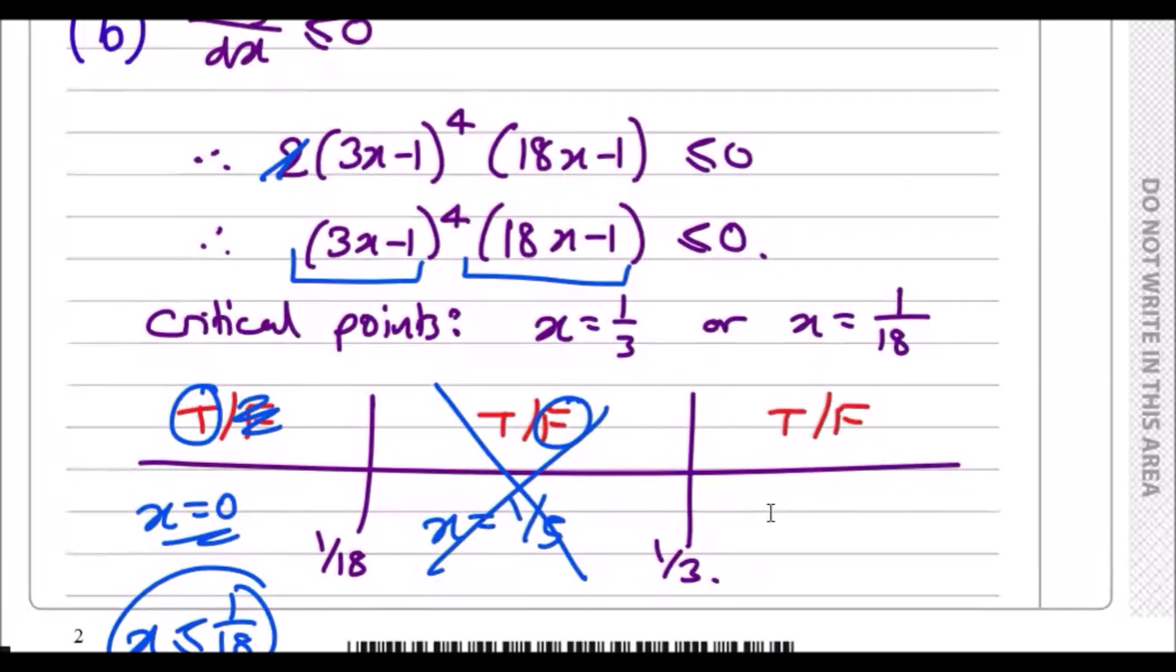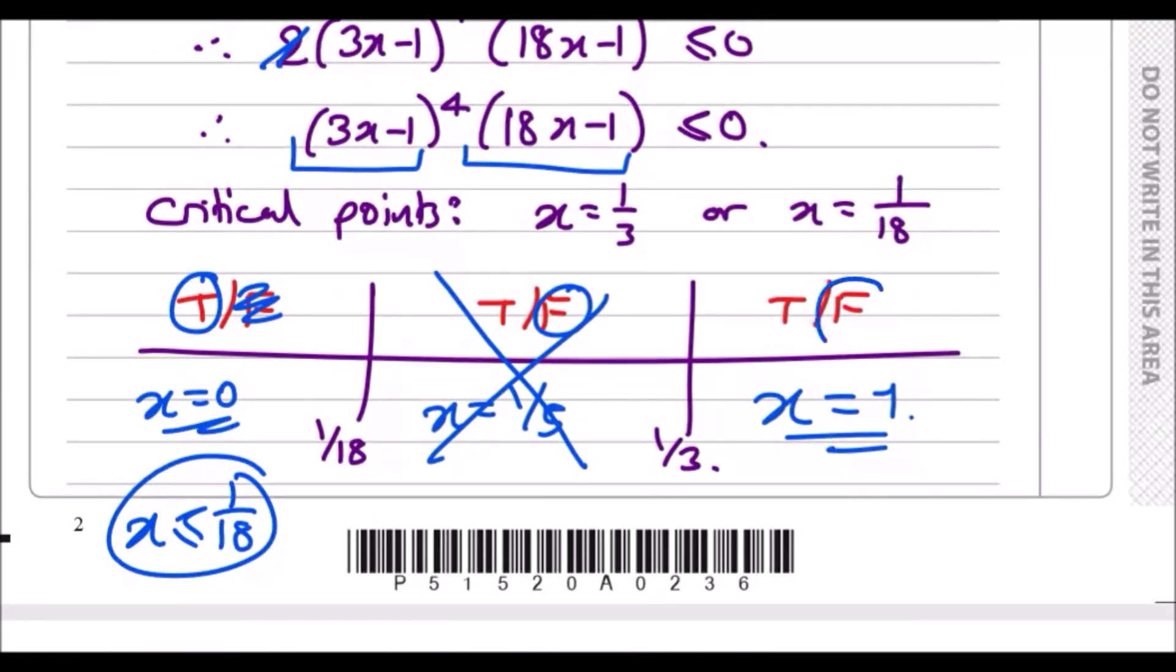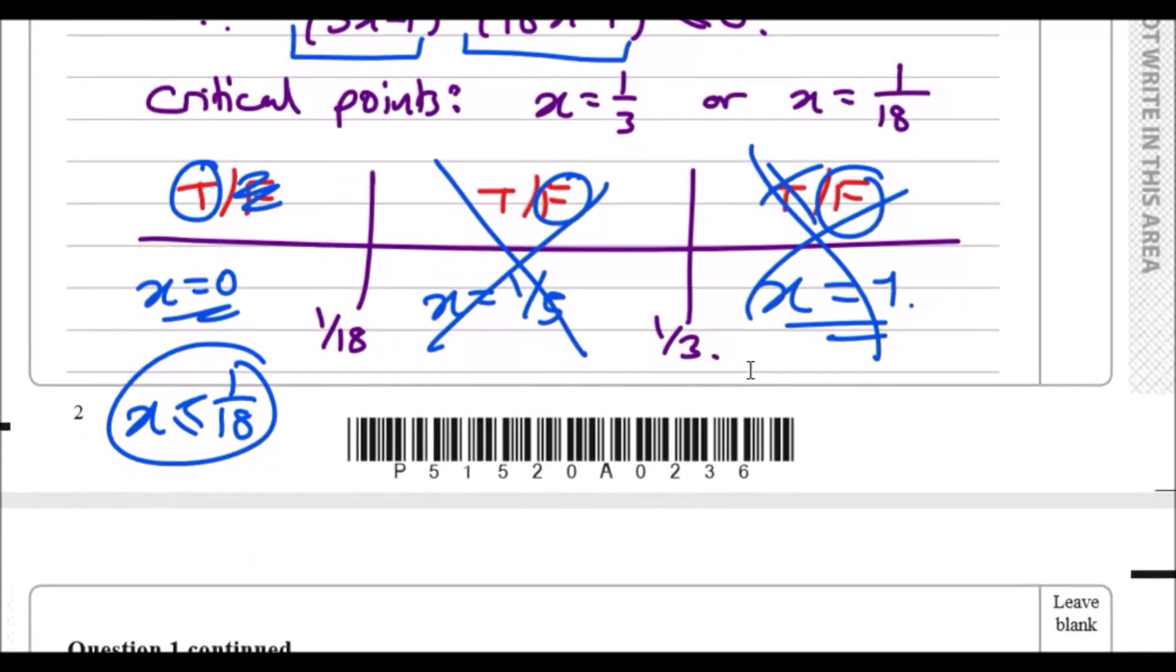There are no x values valid between this range. Picking a value bigger than 1/3, say 1: 3-1 is 2, 2^4 is positive, 18-1 is 17, so two positive numbers multiplied gives a positive answer. This is false. No x values bigger than 1/3 are valid. The only possible solutions are x ≤ 1/18 or x = 1/3 exactly.